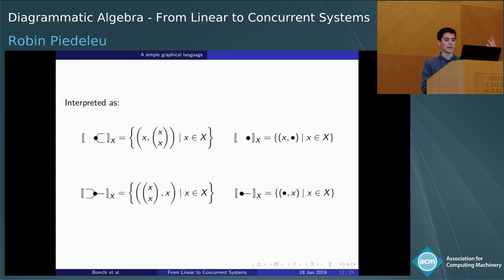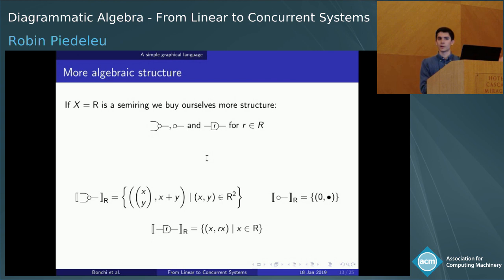So far I've given you a very generic graphical language for networks of interacting components. We'll refine it by assuming more structure on the set of behaviors. Let's say X is a semi-ring — it has two associative binary operations, one of which distributes over the other. We denote addition by a ternary white node and zero by the unary one, and we give ourselves one generator to represent multiplication by a scalar for each element of the semi-ring.